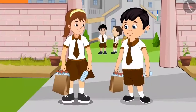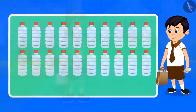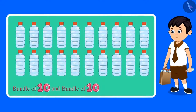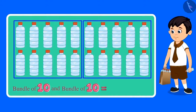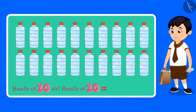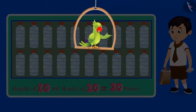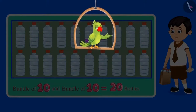Now let us count the number of bottles Chotu has collected. This is one bundle of 10 bottles, and this is another bundle of 10 bottles — two bundles of 10, so these are 20 bottles. Chotu has collected a total of 20 bottles. Did you understand, children? Similarly, by making a bundle of 10, we can count till any number between 9 and 20.